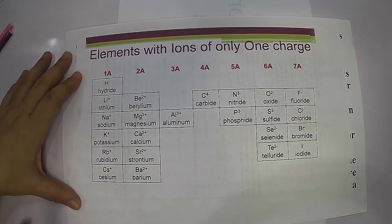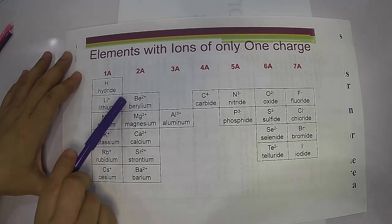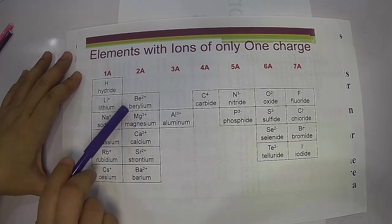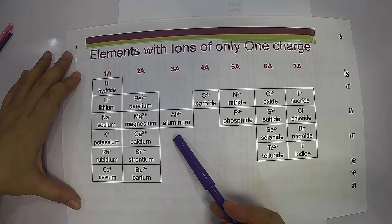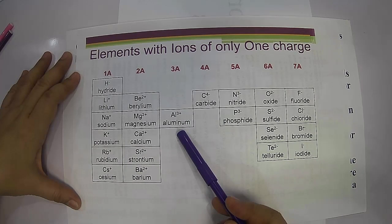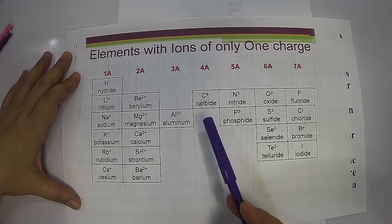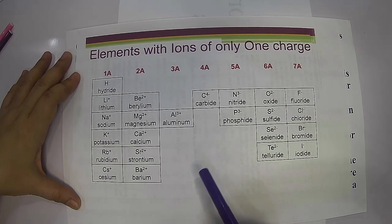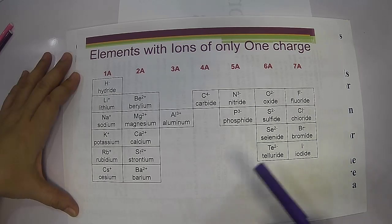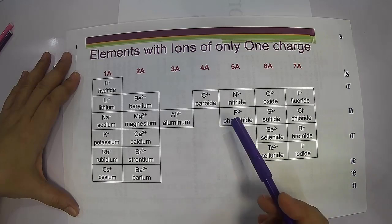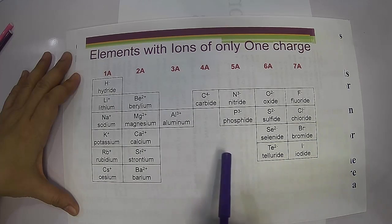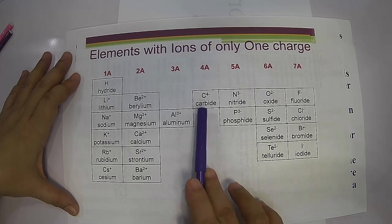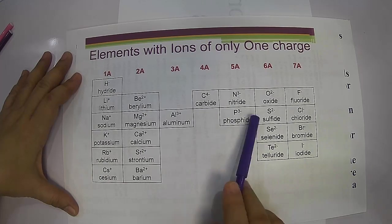For family 2A, beryllium, magnesium, calcium, and barium all have positive two. For group 3A, aluminum has positive three, while boron can have positive three or negative five depending on the composition of the compound where boron is present.